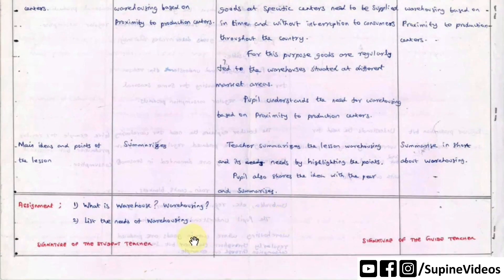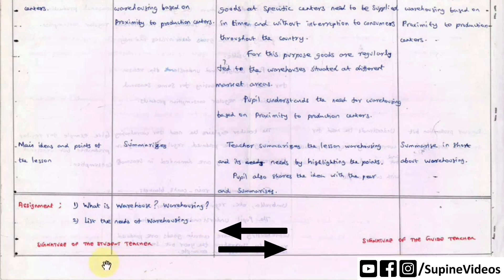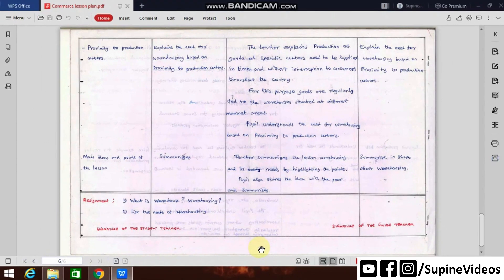In the lesson plan, the signature of the student teacher goes on the left side, and the signature of the guide teacher goes on the right side. Add the link in the description box. Thanks for watching this video.